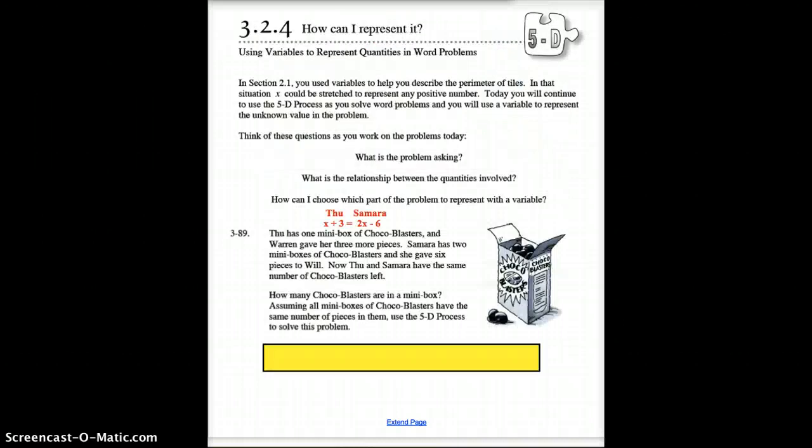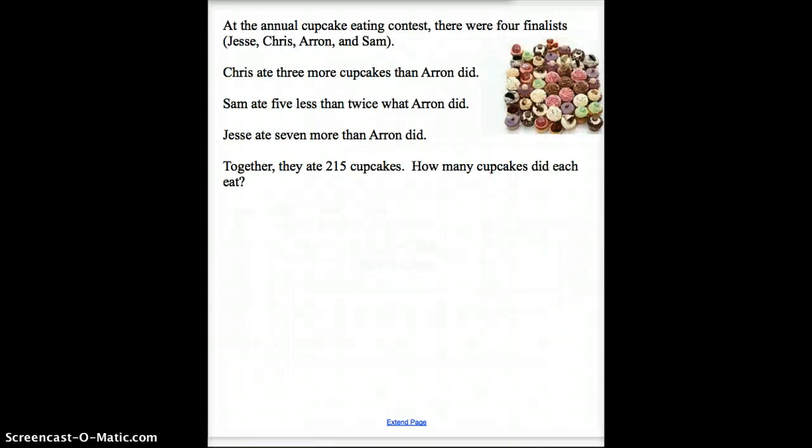Next one. So we are on to that problem right there, the cupcake eating contest. There are four finalists in the cupcake eating contest. We've got Jesse, Chris, Aaron, and Sam. Now, Chris ate three more cupcakes than Aaron did. Well, how many cupcakes did Aaron eat? We don't know, do we? So since we don't know how many Aaron ate - I've got Aaron, Chris, Sam, and Jesse - if we don't know how many Aaron ate, that means Aaron ate X number of cupcakes. So we've got Aaron eating X number of cupcakes, but we know that Chris ate three more cupcakes than Aaron did. So if Chris ate three more than X, that means that Chris ate X plus three. Whatever Aaron ate, plus three more.